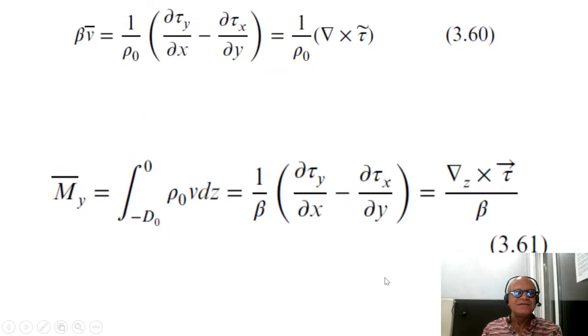Okay, so we looked at this Sverdrup balance. Meridional transport is equal to curl of the wind stress divided by beta. Obviously, there are places where the curl goes to zero, like between where the trade winds end and the westerlies begin, and that's where the gyres terminate.